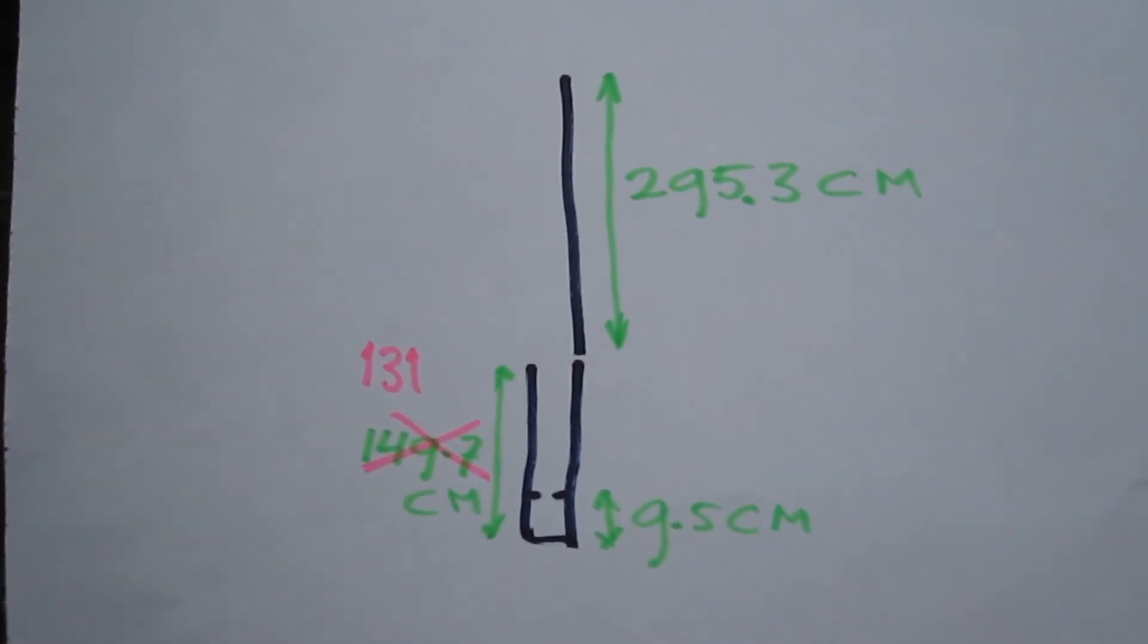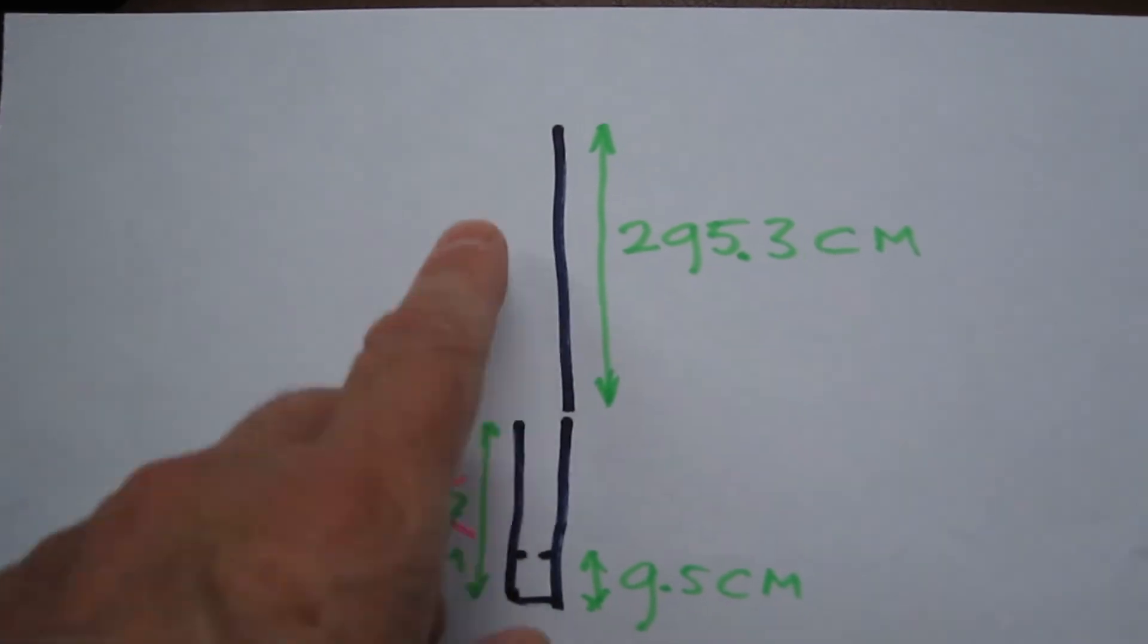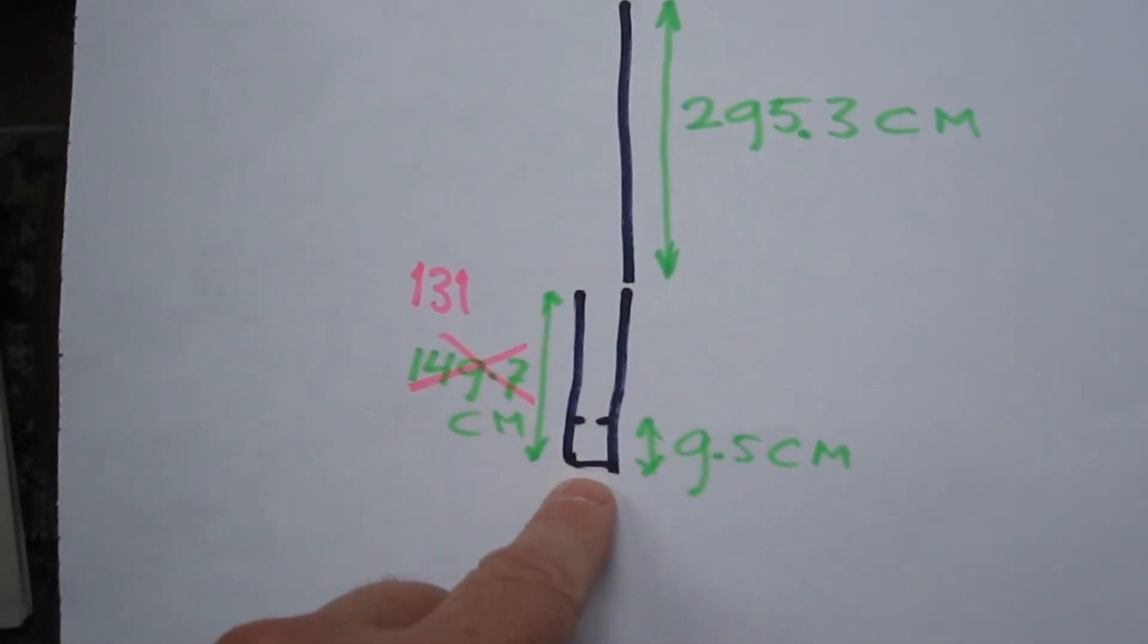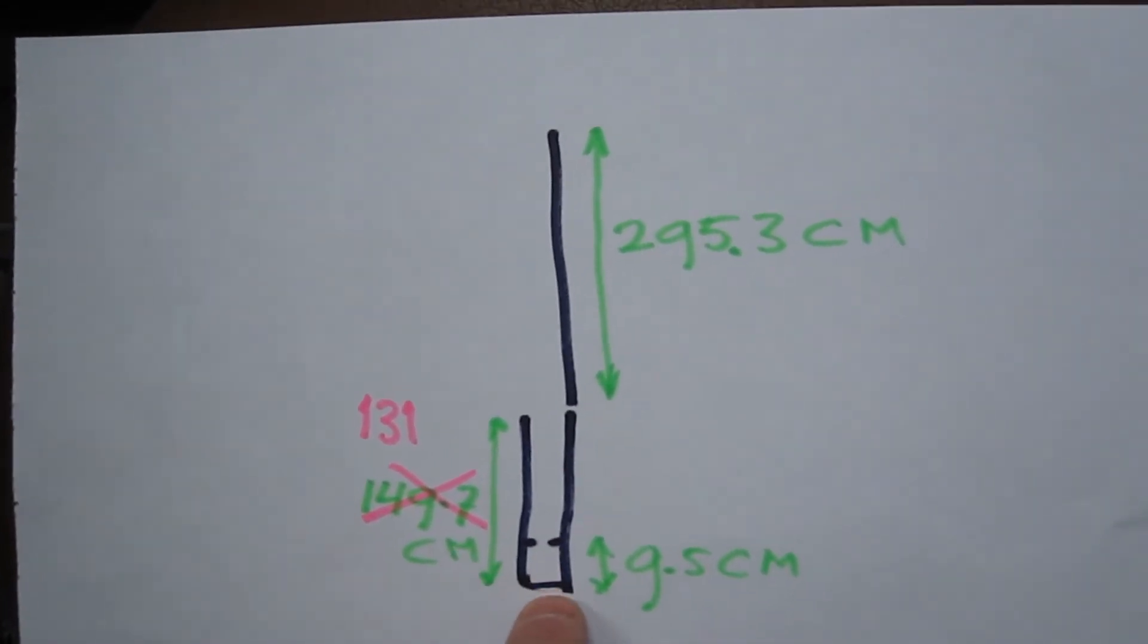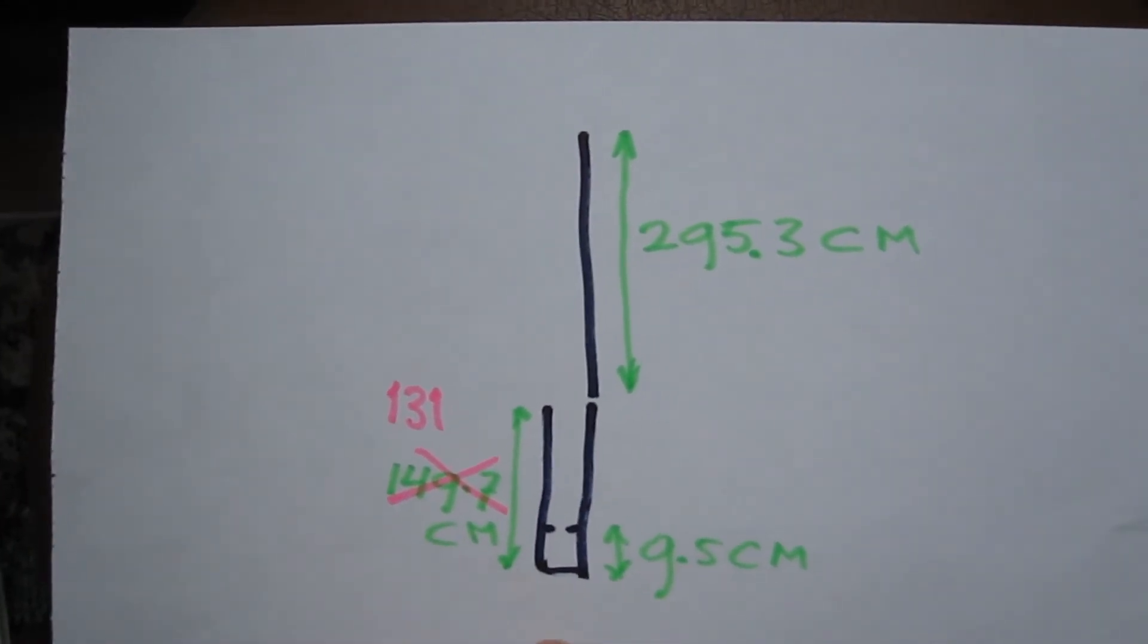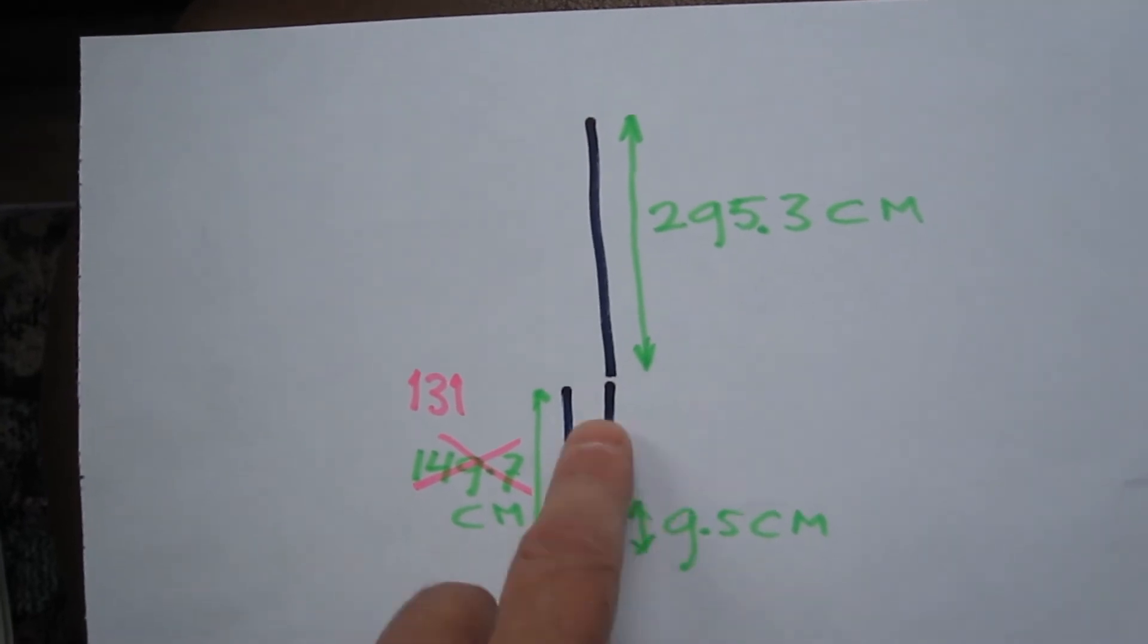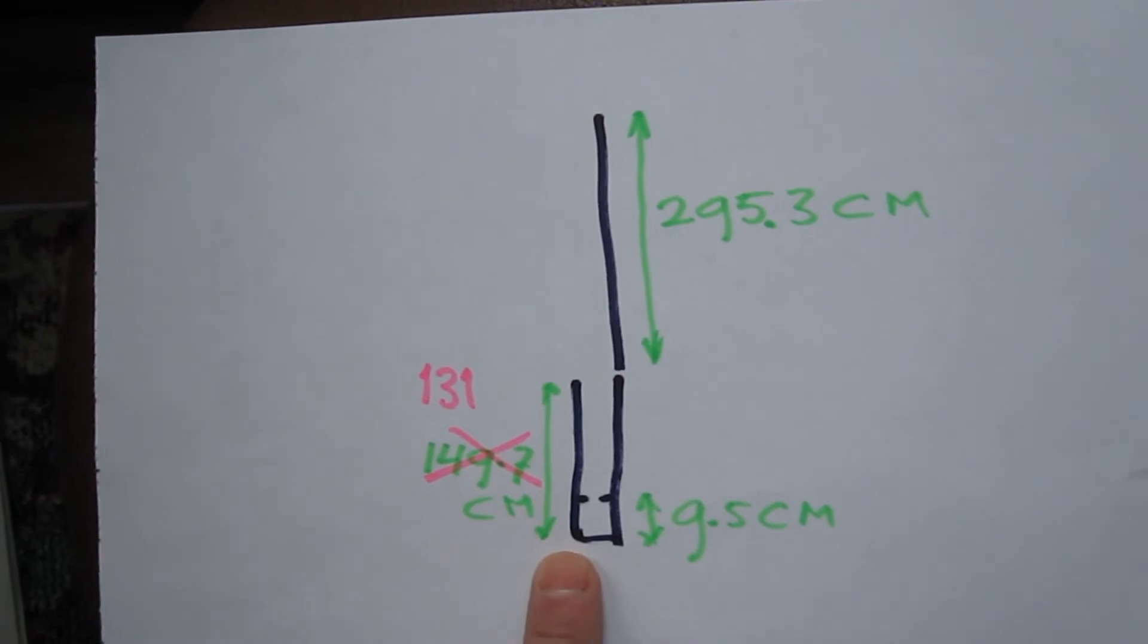For those interested in building it, I have the new dimensions. In fact, this is the radiator, half wavelength, and this is just impedance match. 9.5 centimeters from the bottom, you connect the coax cable. No radials needed. The wire is about half square millimeter, and the distance between those two can be seen on the other part of the video.